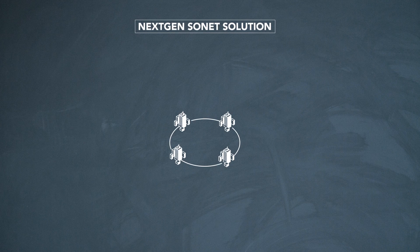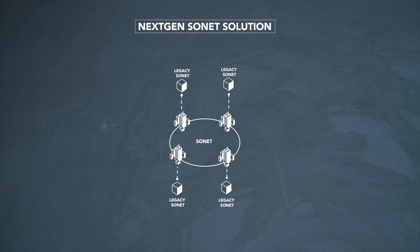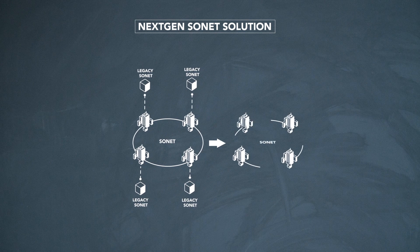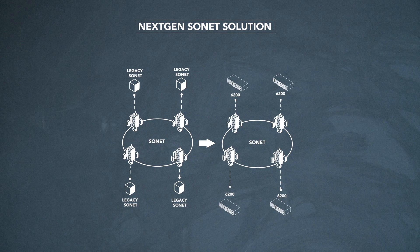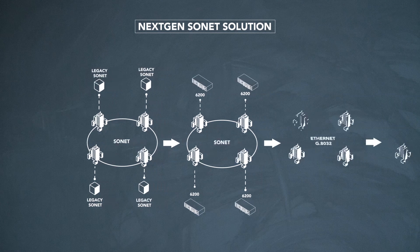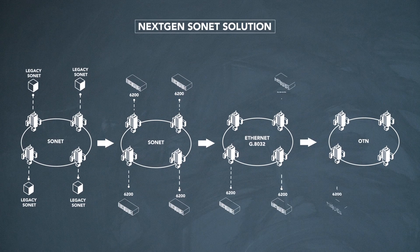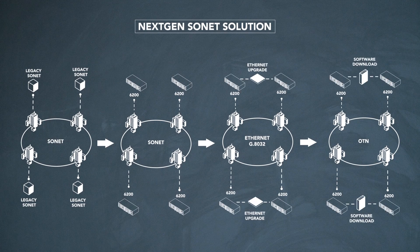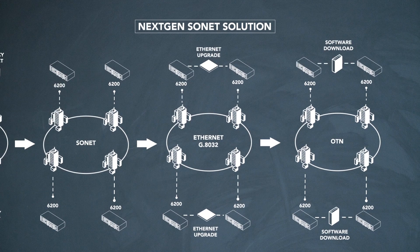In today's discussion we'll be proposing a smooth migration plan with Ciena's 6200 platform. Utilities can leverage their existing Sonnet skill sets, whether it's an OC3, OC12, or an OC48 Sonnet network, and replace it with a scalable 6200 platform. This will enable a utility to deploy known Sonnet technology today and deploy Ethernet and OTN capability when they're ready. The 6200 can support three network protocols: Sonnet, Ethernet, and OTN.